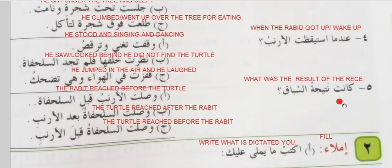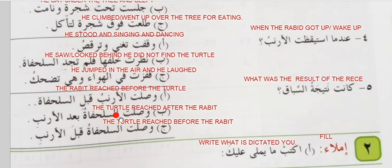Number five — Kaanat natijatun as-sabaq — what was the result of the race? Waslat ar-rannab qablu al-sulfaha — the rabbit reached before the turtle. Waslat al-sulfaha baadu al-arnab — the turtle reached after the rabbit. Waslat al-sulfaha qablu al-arnab — the turtle reached before the rabbit.